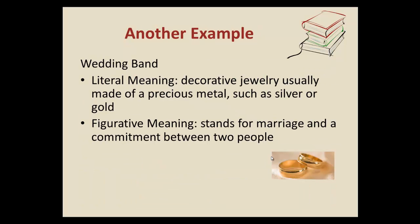Let's take another example that you all would be familiar with: a wedding band. Technically a wedding band is just a ring. The literal meaning of a ring or band is that it's a decorative piece of jewelry usually made of a precious metal such as silver or gold, and it's worn on the ring finger. Because it's on the ring finger, that gives it a significant representation. So figuratively, the wedding band stands for a marriage, a partnership, or a commitment between two people — it represents something bigger for a particular couple.